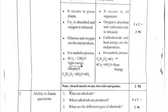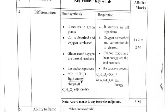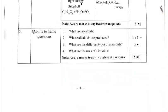Award marks for any two relevant points. No need to write all differences for photosynthesis and respiration — if you wrote any two differences, you will get two out of two marks. For frame questions, you should create questions; award marks for any two relevant questions. If you wrote four or five questions and any two are relevant, you will get two out of two marks.